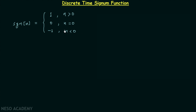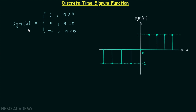Using this definition of the signum function, we can form the sequence of the signum function. It is equal to 0 when n is 0, equal to 1 for all positive values of n, and equal to minus 1 for all negative values of n. This is the plot of the signum function, which is discrete in nature.